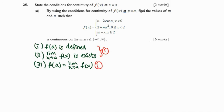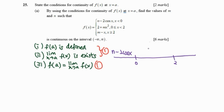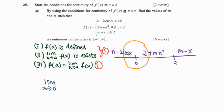Using the condition of continuity for f(x) at x equals a, find the value of m and n such that this piecewise function is continuous. We draw the piecewise function over its intervals: for x less than zero, the function is n minus 2cos(x); for the interval between zero and two, the function is 2 plus mx squared; for x greater than two, the function is m minus x.